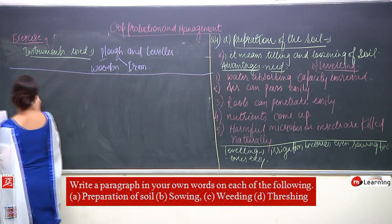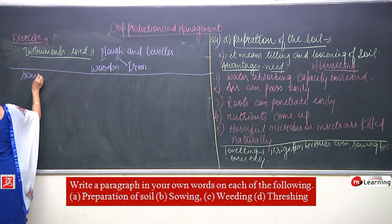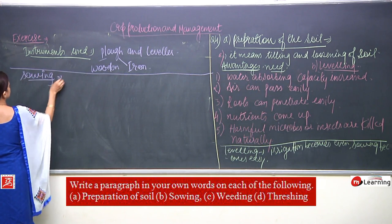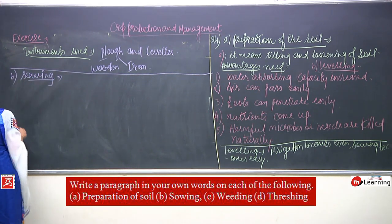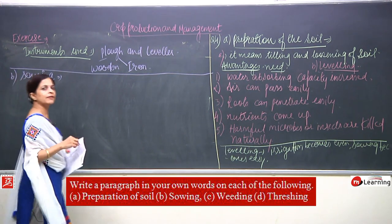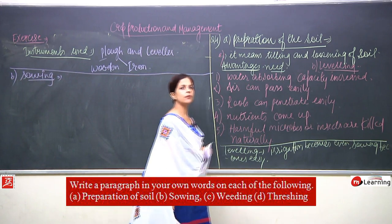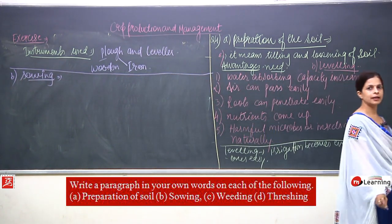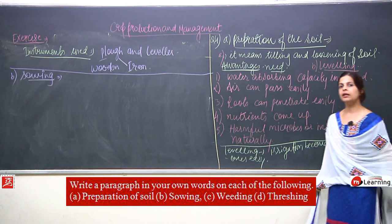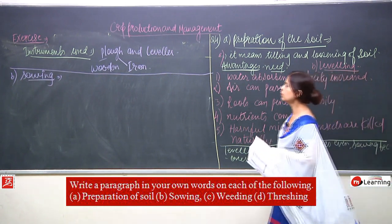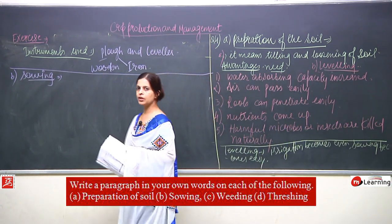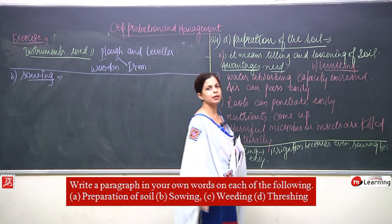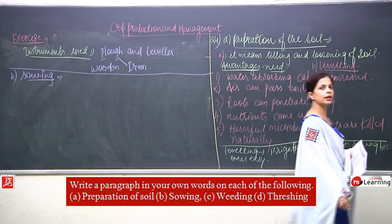The next paragraph is about sowing — the process of putting seeds into the soil or land is known as sowing. I will not write the definition again, but we need to cover the paragraph, so write the definition first.